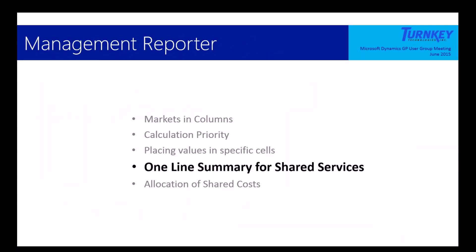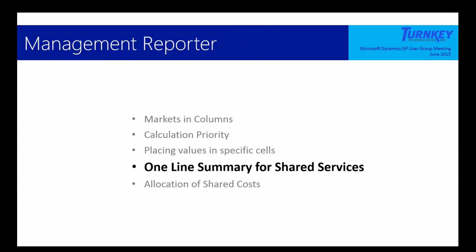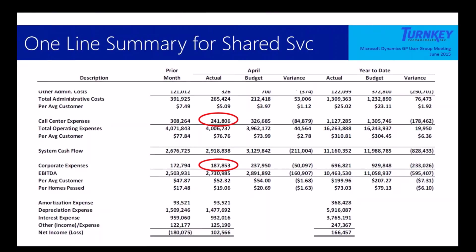Let's look at the next section, which is one line summary for shared services. So here's our client's P&L again. It comes down to administrative costs. They're doing some math on averages per customer. And then it comes in here with this call center expenses. So here it is, all the call center wrapped up in one line. So all their operating stuff is up above. But down here we get call center expenses, and then you get an average per customer and a system cash flow. And then they do corporate expenses.